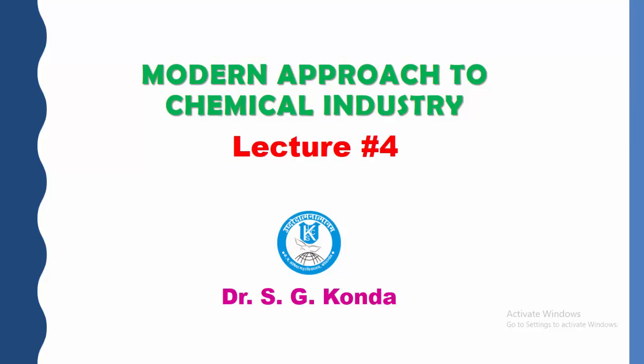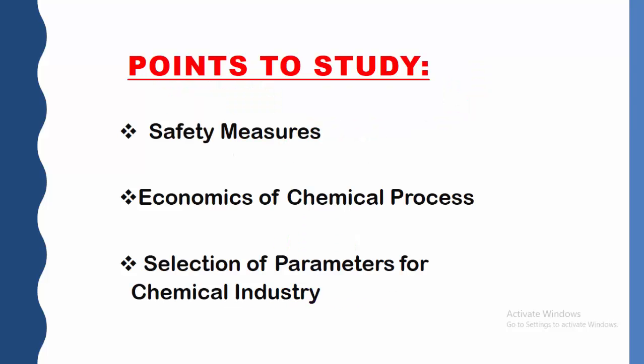Hello, my dear students, very good morning to all of you. Once again I welcome you all to this online lecture. In the last lecture we discussed about process control, research and development, and pollution control. This is one more lecture of this modern approach to chemical industry. In today's lecture we are going to see some new units in a chemical industry — safety measures, economics of chemical process, and selection of parameters for a chemical industry. Let's see one by one.